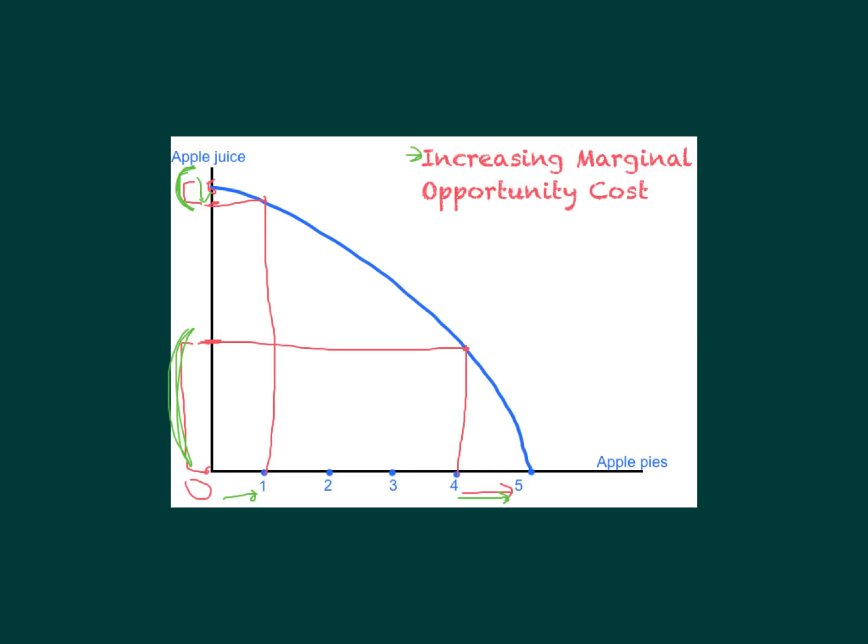Graphically, that's what we see here — that's what you get when you have this curved shape of a PPF. We'll see in a moment that we can have different shapes. When it's curved like this, it means you have increasing marginal opportunity cost. This is a more realistic version than having a constant marginal opportunity cost — think about what we're talking about here with apple juice and apple pie.